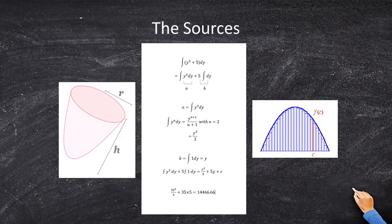So y squared will be part (a) and 5 dy will be part (b). To integrate y squared, we use the power rule: y raised to the n+1 over n+1, with n equals 2. That reduces down to y cubed over 3. Next, integrating 1 dy gives us y, and then we combine to get our final integrated formula: y cubed over 3 plus 5y.